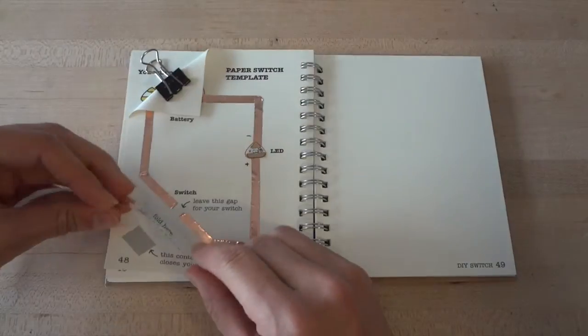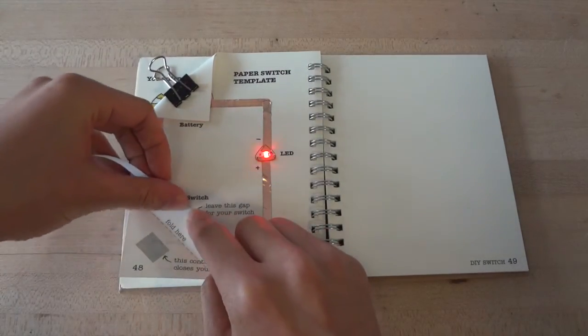When you close this gap with a conductive material, such as the copper tape, the light will turn on.